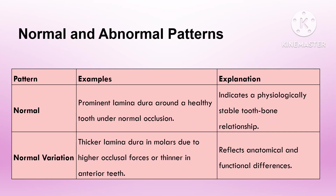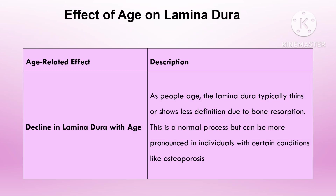Normal variations in the lamina dura may be due to anatomical variations, age-related changes, tooth function, occlusal load, or physiological remodeling. The thickness and density can differ between individuals and even between teeth in the same person. Posterior teeth often show a thicker lamina dura than anterior teeth due to differences in occlusal forces. In young individuals, the lamina dura tends to be more prominent due to active bone turnover.